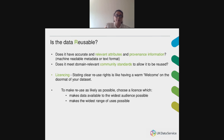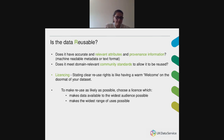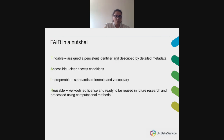Finally, is data reusable? The ultimate goal of FAIR is to optimize the reuse of data. To achieve this, metadata and data should be well described so that they can be replicated and combined in different settings. Tools such as CureMyData can help improve the data quality of data you're sharing. The question is whether there is enough information about the data to allow its reuse — this includes provenance information, methods of collection, and whether it meets relevant community standards. Just as important is the license under which the data is published, which should make data available to the widest audience possible and allow the widest range of uses possible.